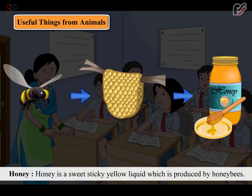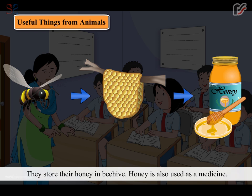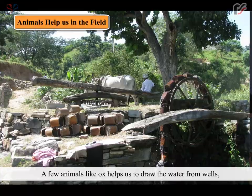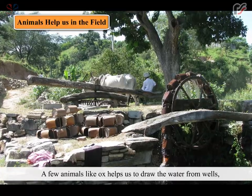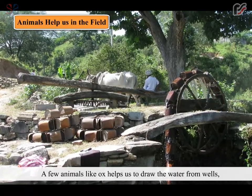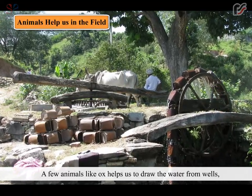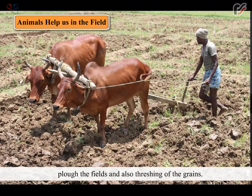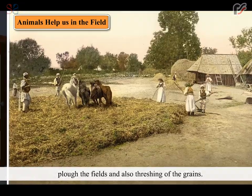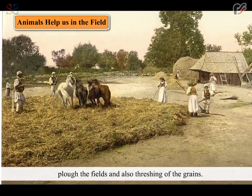Honey is a sweet sticky yellow liquid which is produced by honey bees. They store their honey in a beehive. Honey is also used as a medicine. A few animals like ox help us to draw water from wells, plough the fields and also thresh the grains.